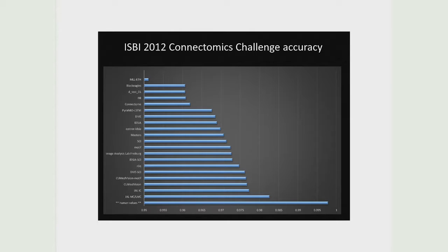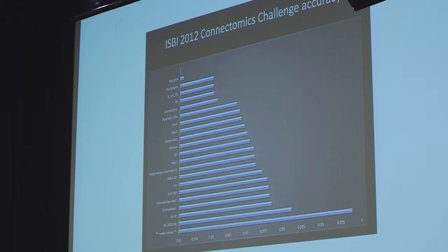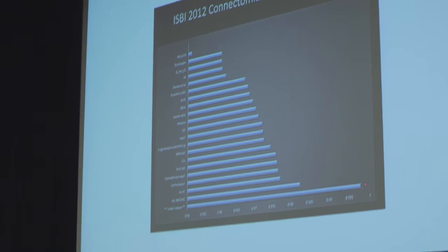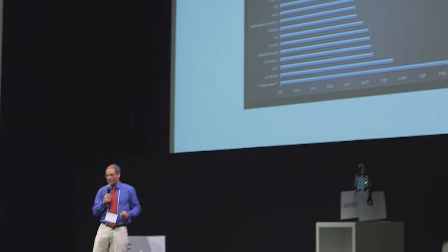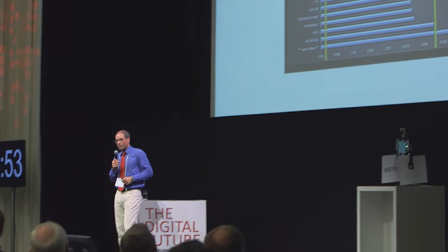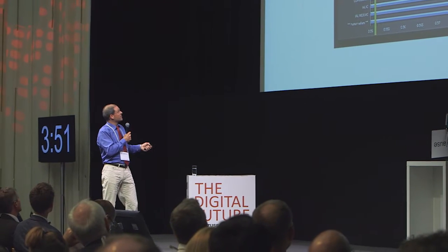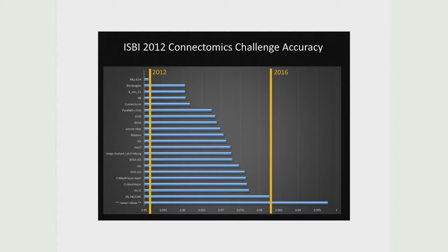The community is progressing well. There are a couple of challenges. This one is the most competitive — we see the top 20 contenders, with accuracy going from 0.95 to 1. Humans are pretty close. This is how the winner of the challenge did in 2012, and this is where we are in 2016, and my group is currently leading this pack.